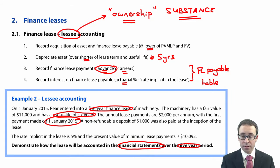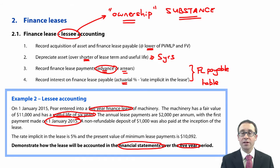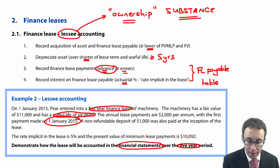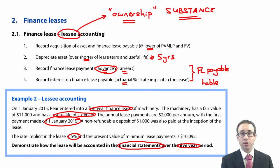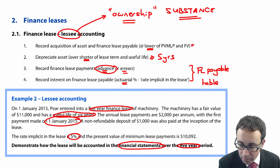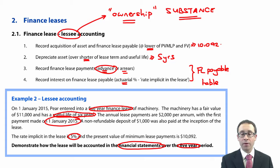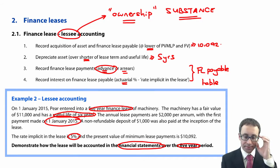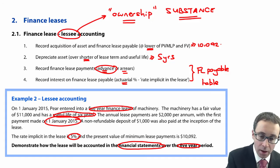There's also a non-refundable deposit of $1,000 paid at inception of the lease, so when we're looking at the starting lease payable we need to consider that deposit. The rate implicit in the lease is 5% — that's the actuarial percentage we're going to use — and the present value of minimum lease payments is $10,092. We're going to capitalise the asset at $10,092, because that's the lower of $10,092 and $11,000. The payments are in advance and the actuarial rate is 5%.